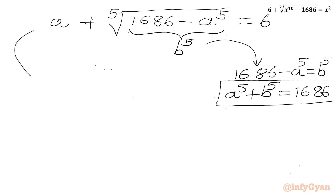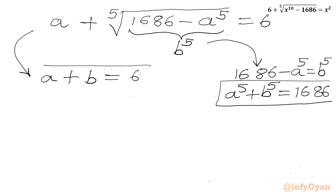The second equation we get from the substitution itself. We write a plus the fifth root of b to the power 5, which gives us b, equal to 6. So a plus b equals 6. This is our second equation.